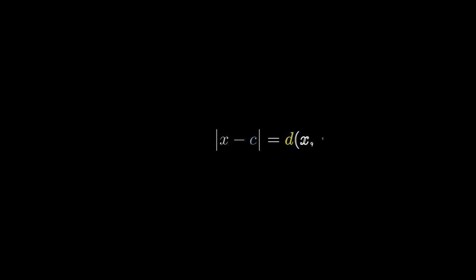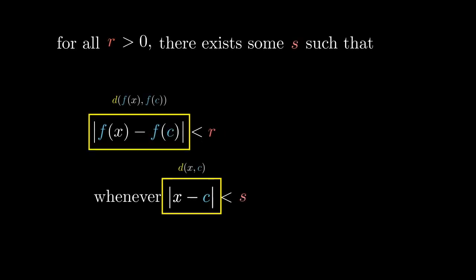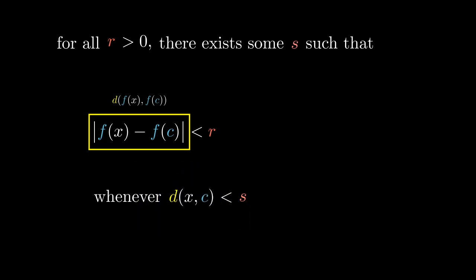But are the ideas of subtraction and absolute value really essential to the idea behind the definition? Not really — we only use them because we need them in order to define the distance between two numbers. Don't you think it would make the point of the definition more obvious if, instead of the absolute value of the difference of x and c, we just said d, and bundled up the definition of the distance between two numbers into d?